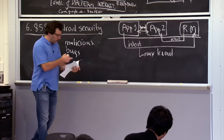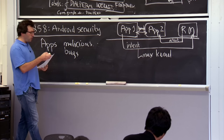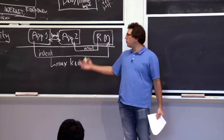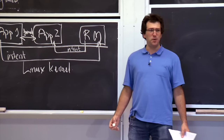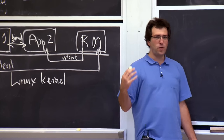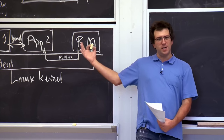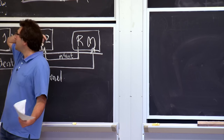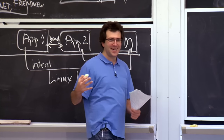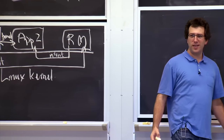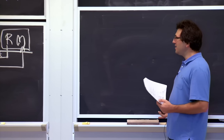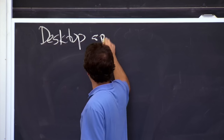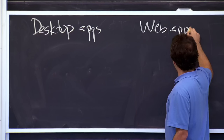Why did these guys design a whole new app model for Android instead of using desktop or web apps? Desktop apps have no isolation at all between applications — you're fully trusting any app you install with all data on your machine. Web apps have reasonable isolation: as long as the same origin policy is correctly implemented by the browser, it's reasonably safe to go to some arbitrary website. So far web apps seem like the winning plan — they're easy to use and have isolation.